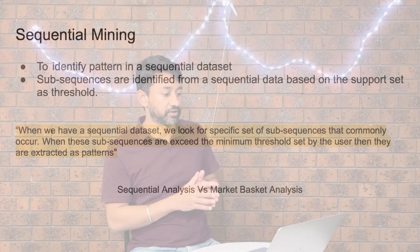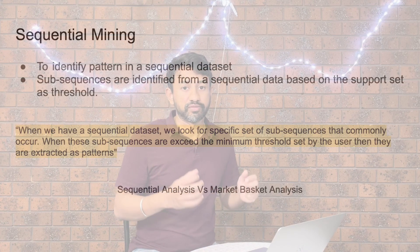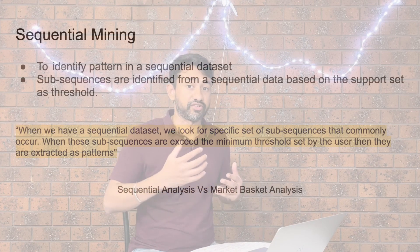Let's first understand the definition of sequential pattern mining. Sequential pattern mining is used when we have a dataset that has a sequence in it. We look for specific sub-sequences that happen within the dataset. We identify all the sub-sequences that are popular enough, those that cross the support threshold we set, and we identify these as predominant patterns present in the dataset.